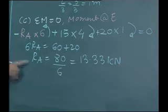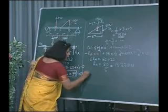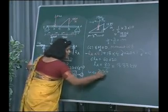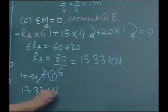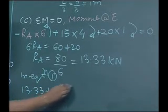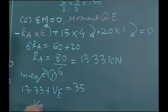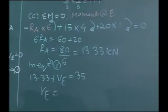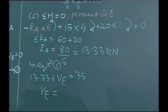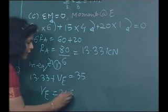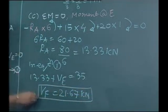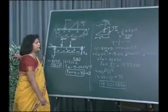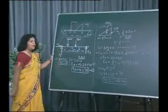Substituting R_A = 13.33 into Equation 1: 13.33 + V_E = 35, so V_E = 35 − 13.33 = 21.67 kilo Newtons. The last step is to find the single resultant force for the hinge support, combining V_E and H_E.